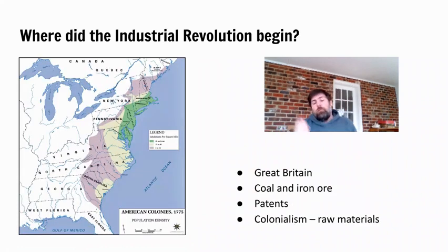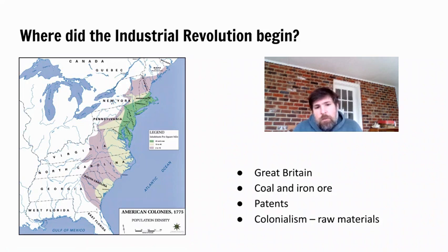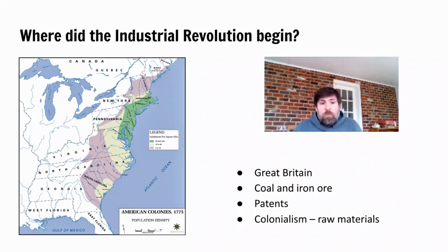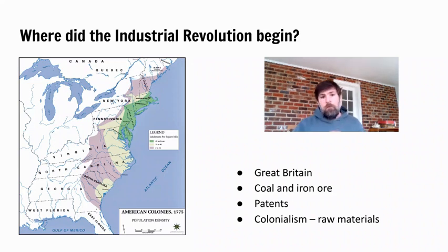Another reason it happened in Great Britain was because Great Britain had access to lots of raw materials through colonialism. Great Britain had many colonies overseas — taking other people's land and harvesting their natural resources and sending them back to Britain. This gave Great Britain the raw materials necessary to run a factory. For example, if you're making cotton textiles you need cotton, which they originally got from colonies in the Americas, and later from colonies in India and by buying from the southern United States.